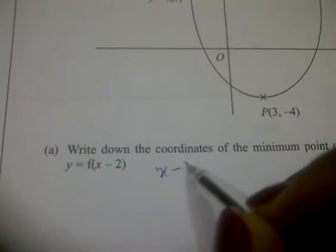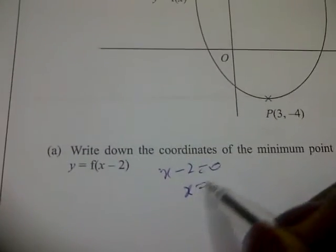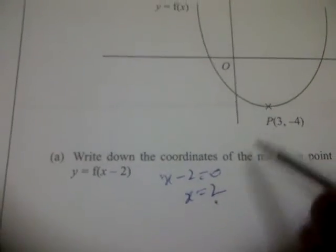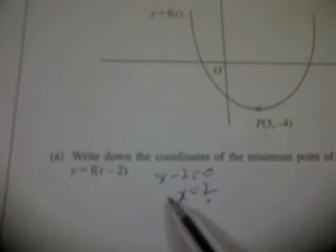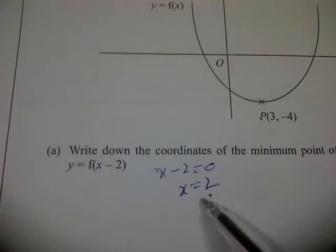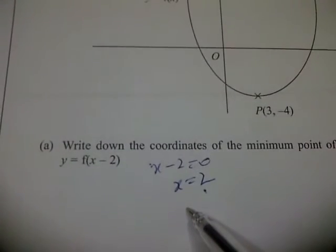Then x minus 2 equal to 0, x would be equal to 2 from here. So when you compare it with this, to find out the coordinates of the minimum point, x plus 3 plus 2 is 5.